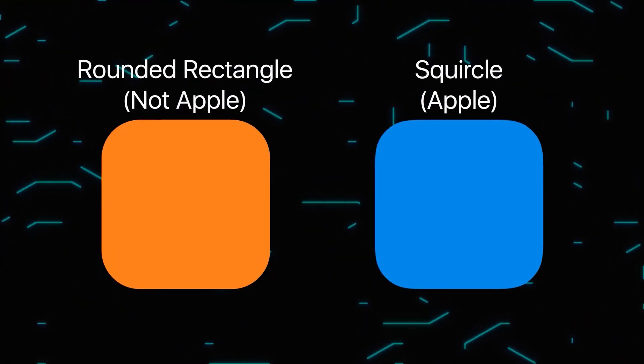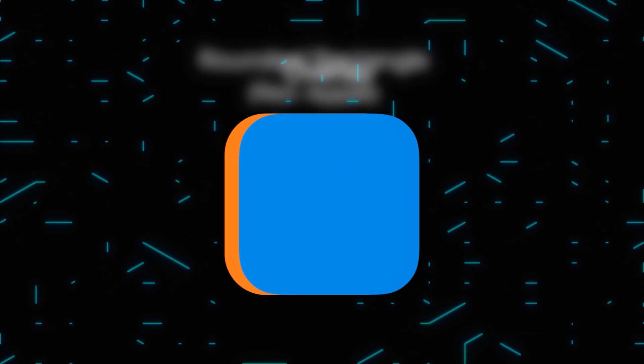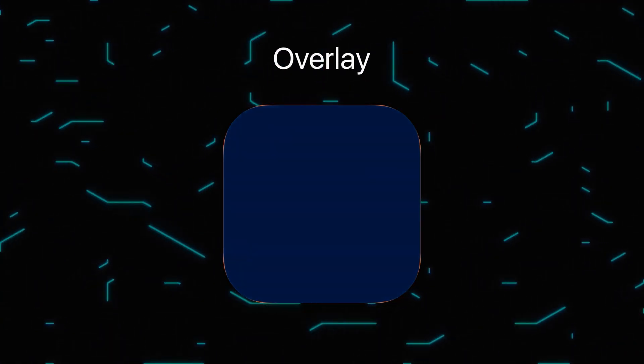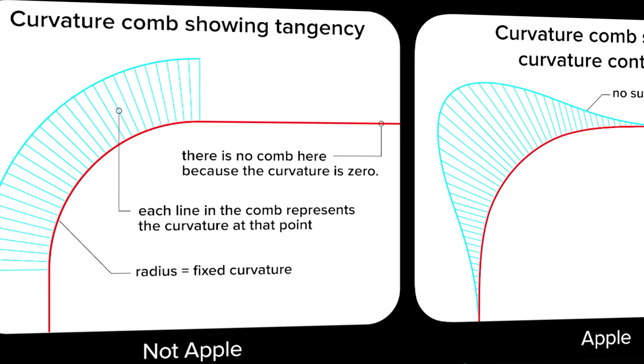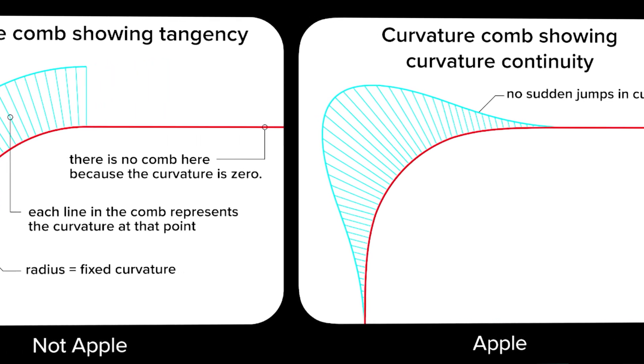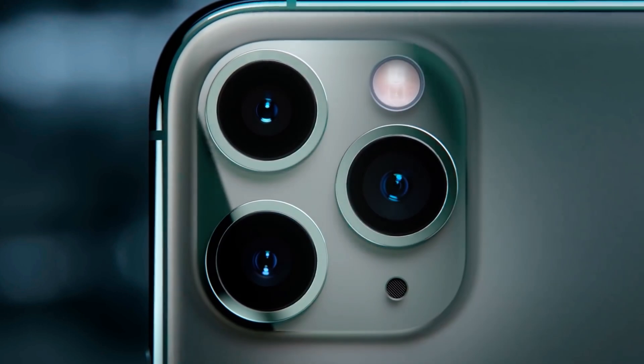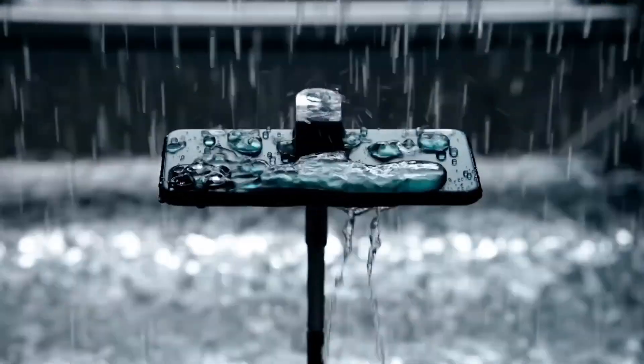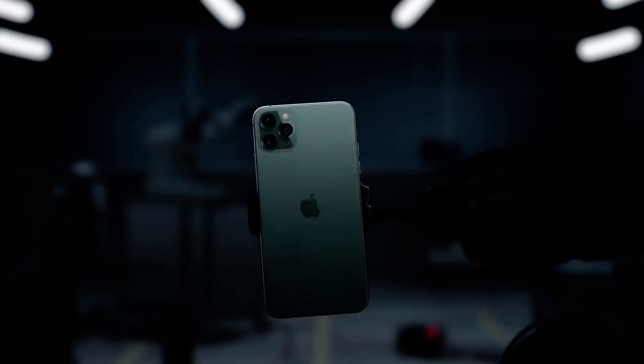But let's get back to the icons. Let's find out the difference between a squircle and a square with rounded corners, and why Apple designers didn't like the latter. If we compare real icons with fakes, we will see that the rounding of the squircle, or super ellipse, begins earlier, and the degree of rounding increases gradually. This can be best visualized with the help of crests of curvature. It would seem that the difference is a couple of pixels, but smooth transitions allow you to achieve the so-called continuity of curvature, and this gives a stunning effect. Thus, the shape of an object doesn't look artificial, as if assembled from different forms, but natural and complete.